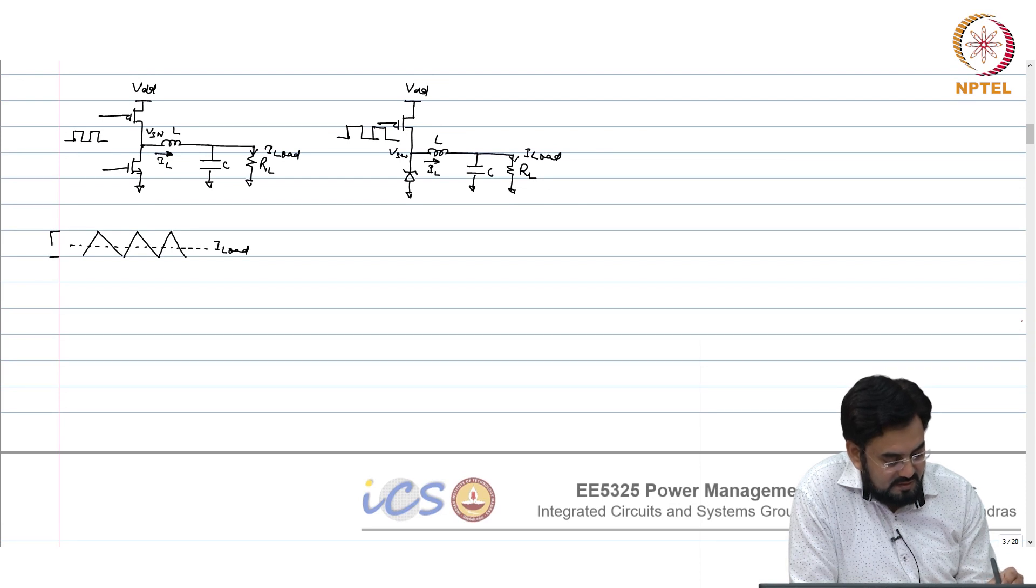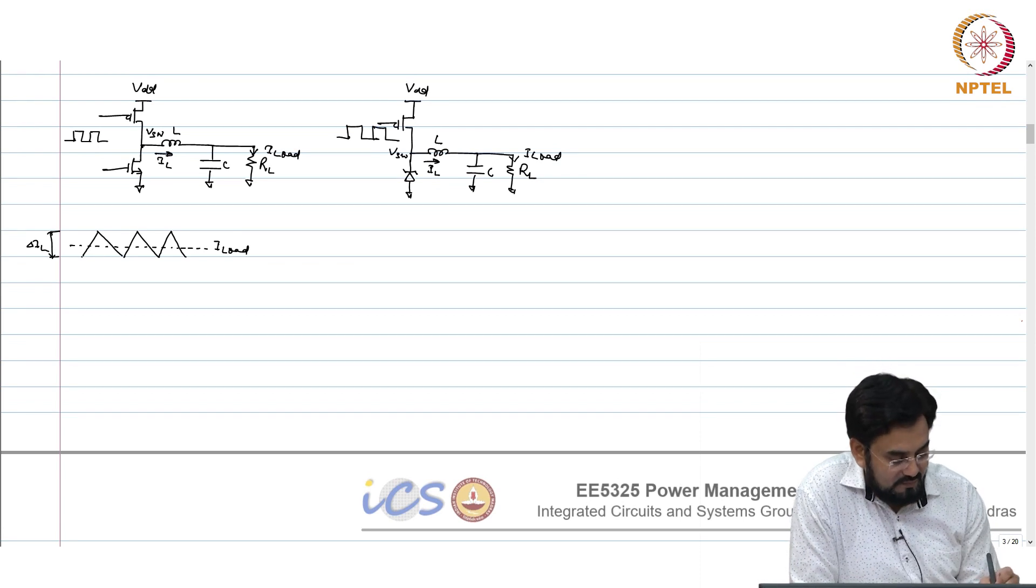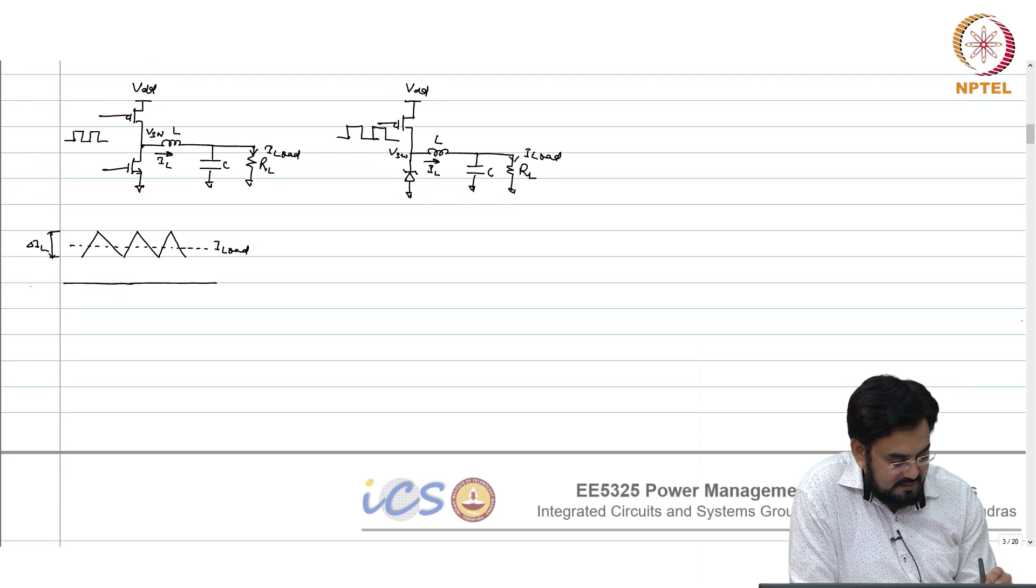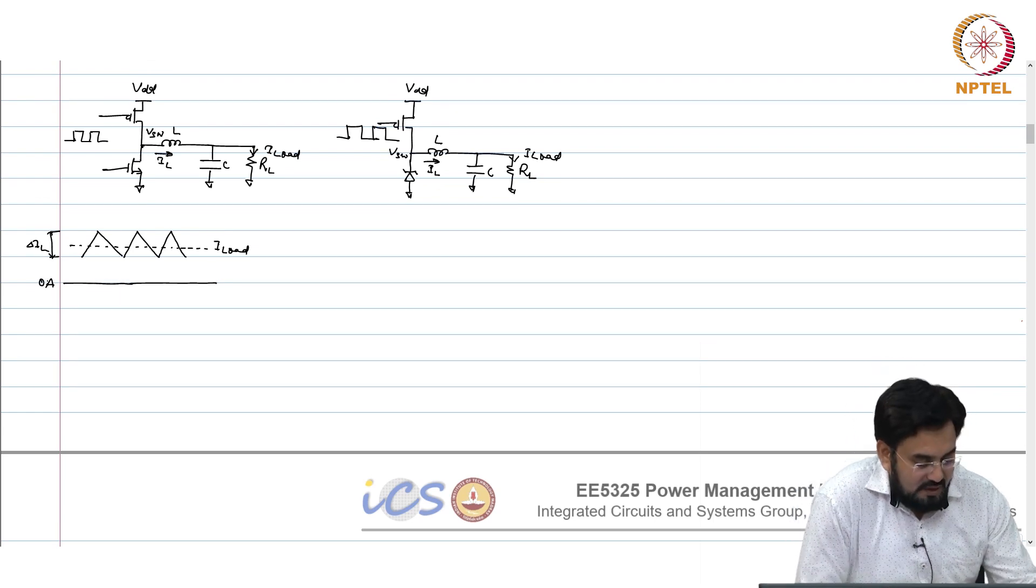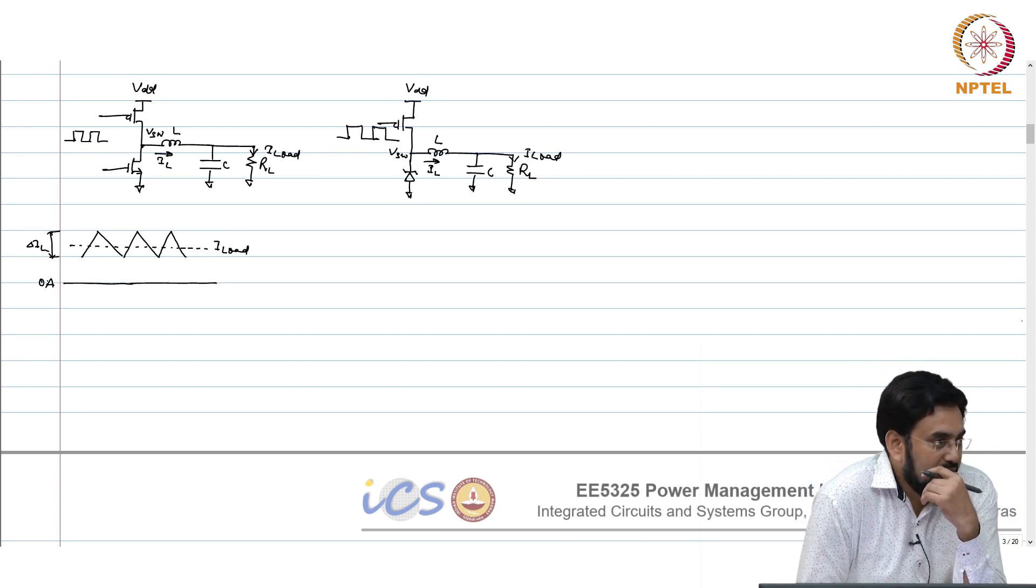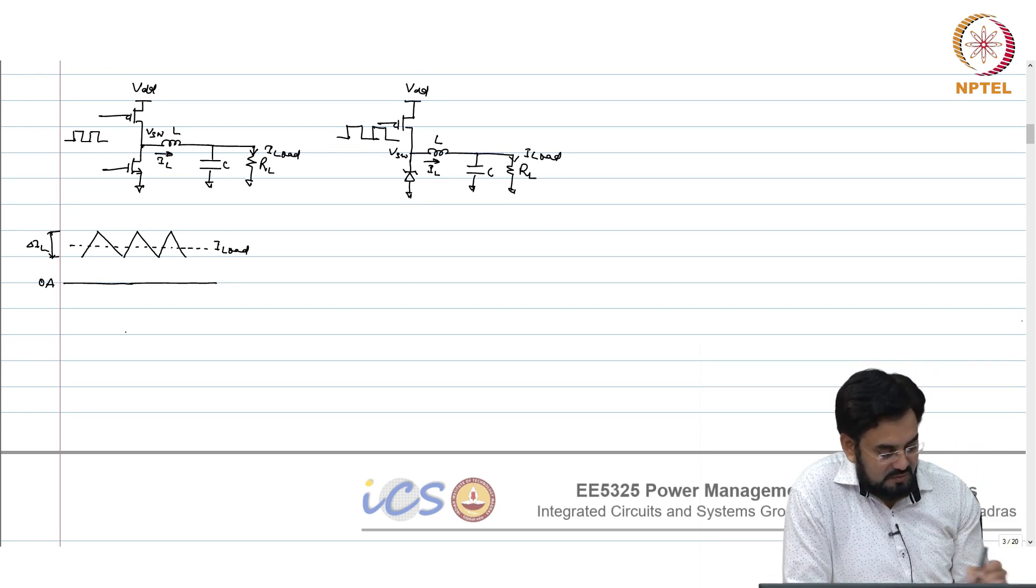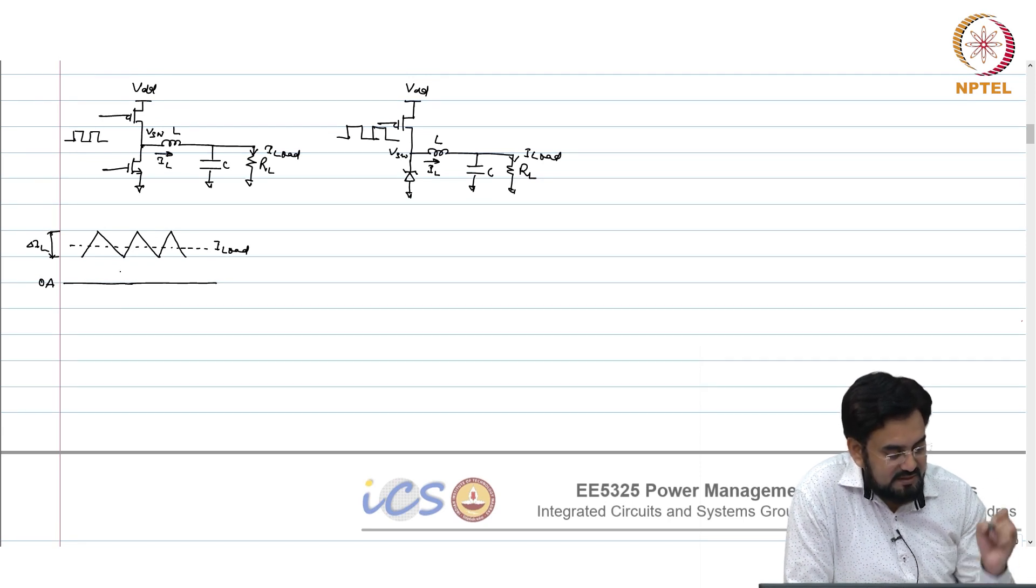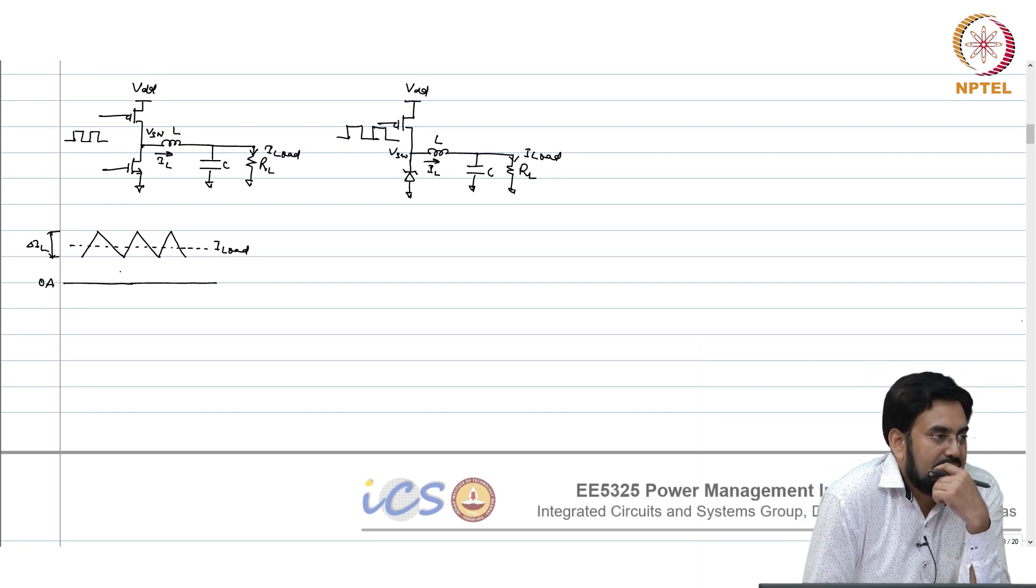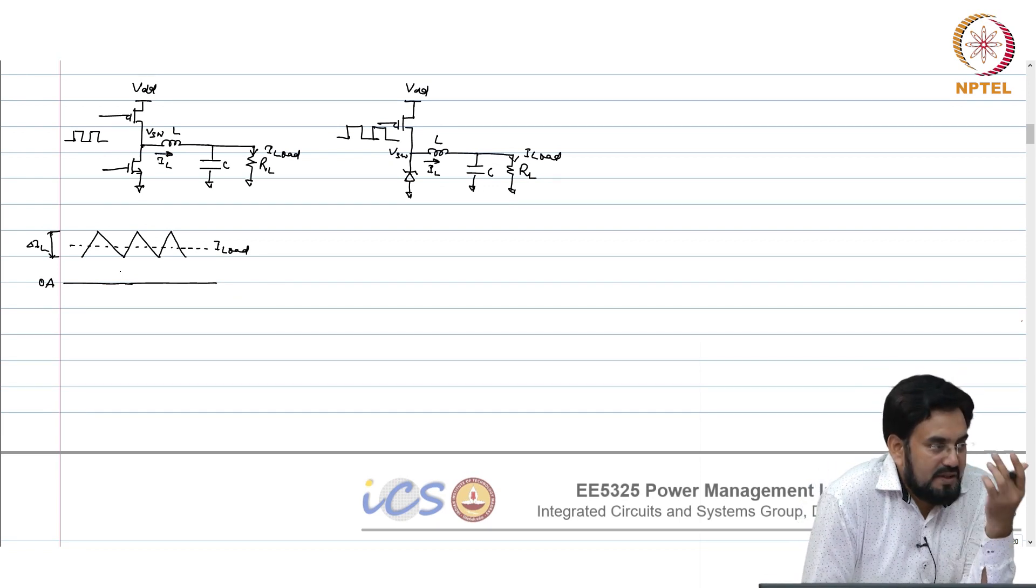This is I_load and this is your delta_L. Let's say my zero current is here, this is 0 amp. Now, if I keep reducing the I_load what would happen? When will this valley point hit the 0 amp? At delta_L by 2.